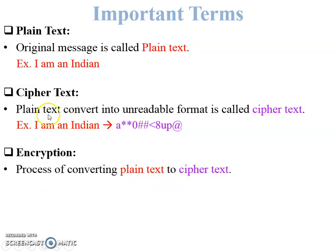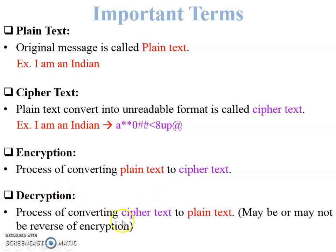Next is encryption. Encryption is the process of converting plain text to ciphertext. Whenever plain text is converted into ciphertext, that process is called encryption. Any algorithm used to convert plain text into ciphertext is called an encryption algorithm. There are many encryption algorithms available in network security.